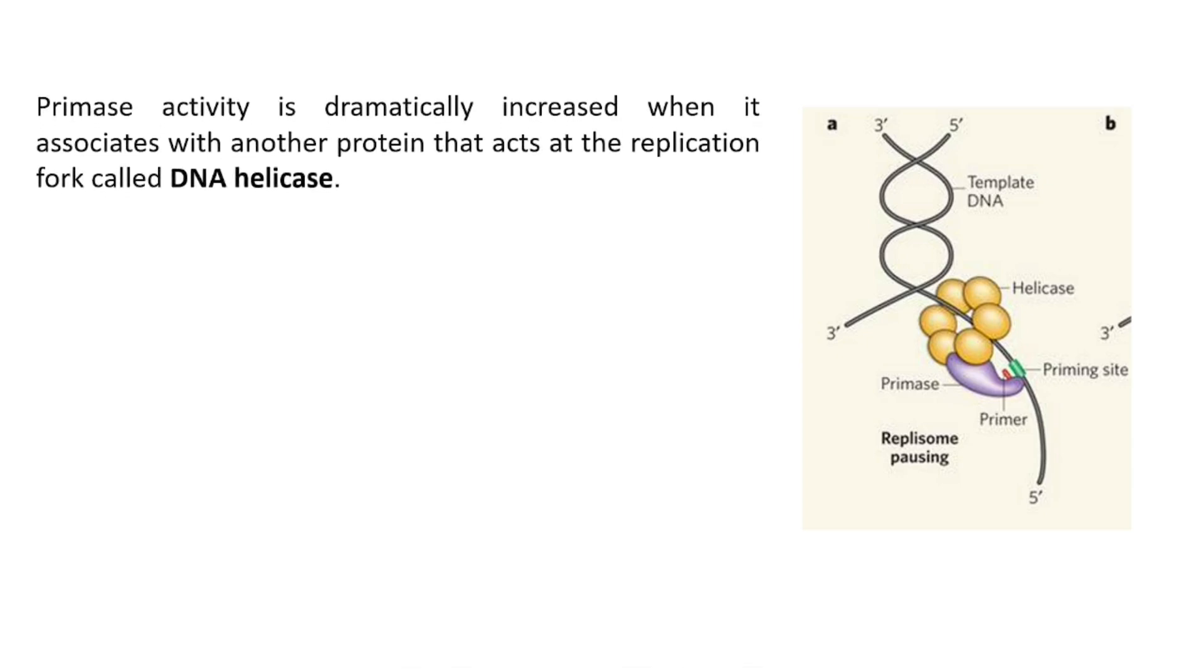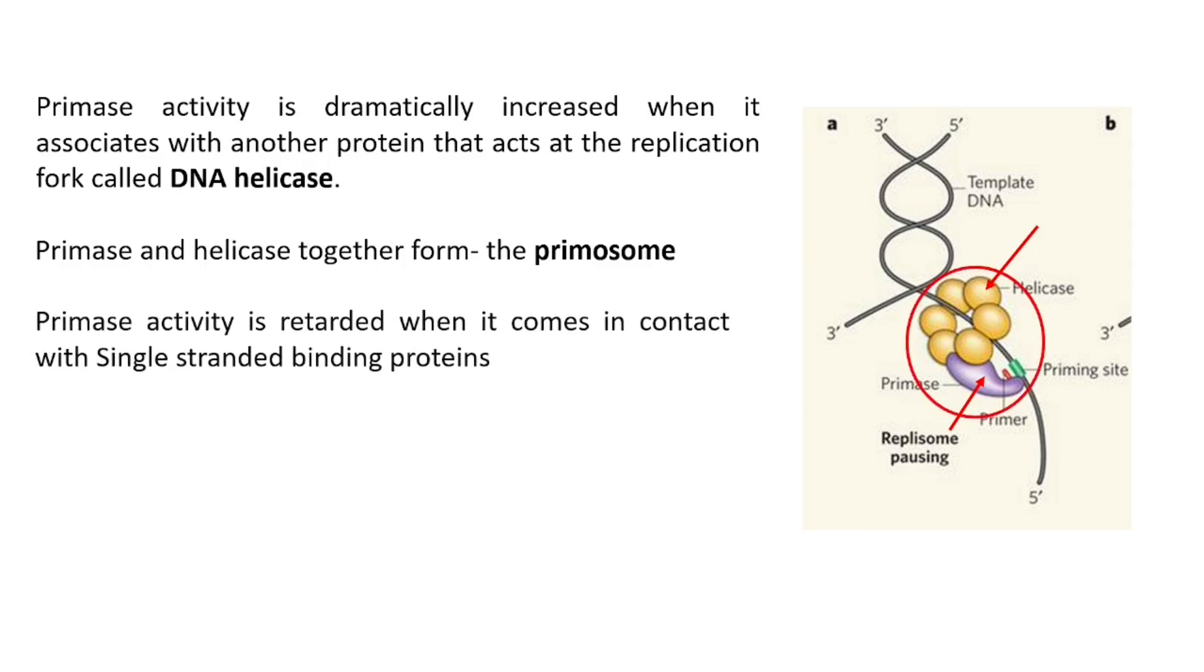Primase activity is dramatically increased when primase associates with another protein at the replication fork called the DNA helicase. Primase and helicase together form the primosome. Primase activity is retarded when it comes in contact with single-stranded binding proteins. Thus, association with helicase activates the primase and association with SSBs deactivates it.